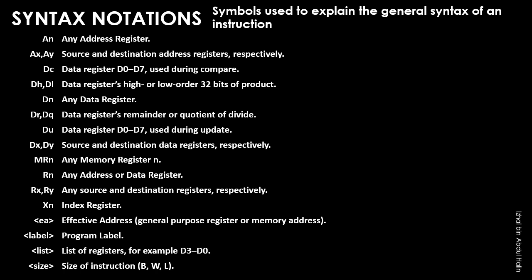Let's look at the first notation, An, which stands for any address register. When you see this in the general syntax of an instruction, you can replace it with any address register from A0 to A7. Now look at the eighth row — the notation is Dx, Dy. The x behind the D means source operand, so Dx means any data register can be used as the source register. On the other hand, y stands for destination, so Dy means that any data register can be used as the destination register.